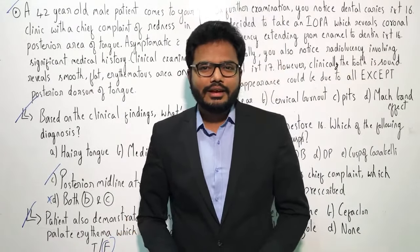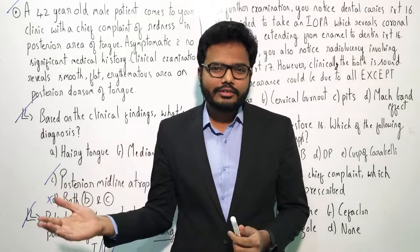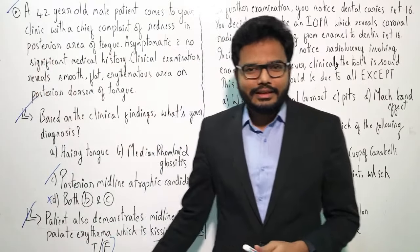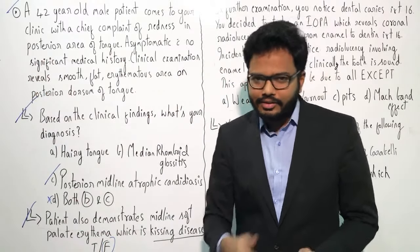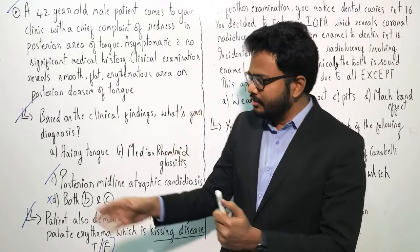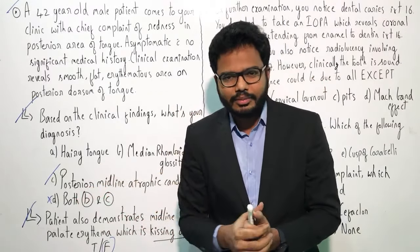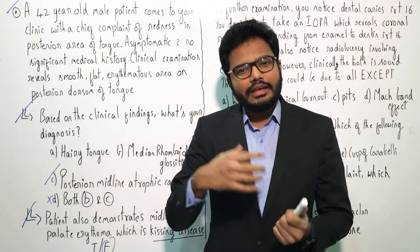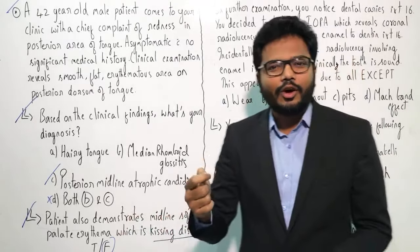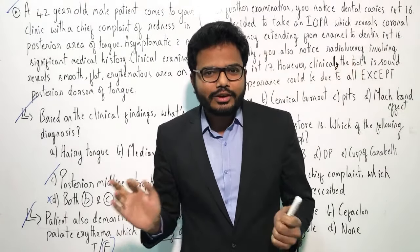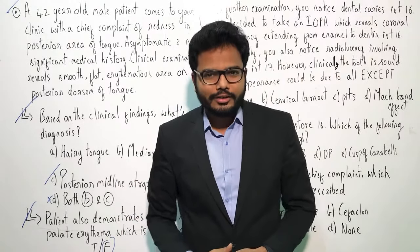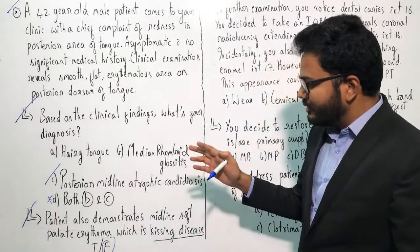Kissing disease — glandular fever, infectious mononucleosis — is caused by Epstein-Barr virus. That's a different story. This is a kissing lesion. Because of proximity and contact with the particular aspect on the posterior aspect of tongue, there is even palatal erythema, especially on the soft palate, which is called a kissing lesion. It's not kissing disease. Both are different.